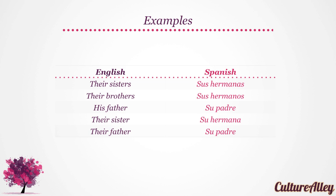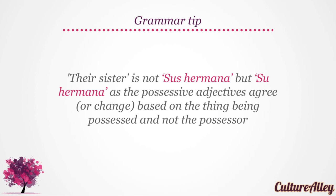Some more examples related to su. Their sister is translated as su hermana. And their sisters becomes sus hermanas — try saying their sisters. Sus hermanas. And their brothers is sus hermanos. His father becomes su padre. Their father is translated as su padre. Remember, their sister is not sus hermana but su hermana, as possessive adjectives agree based on the thing being possessed, not the possessor.